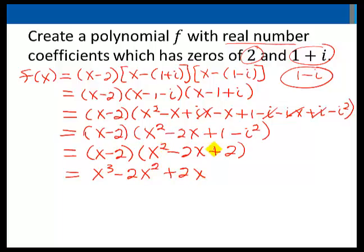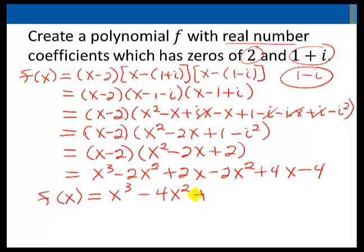Distribute the negative 2 through to give me negative 2x squared plus 4x minus 4. And we'll simplify to end up with a polynomial f of x of x cubed minus 4x squared plus 6x minus 4.